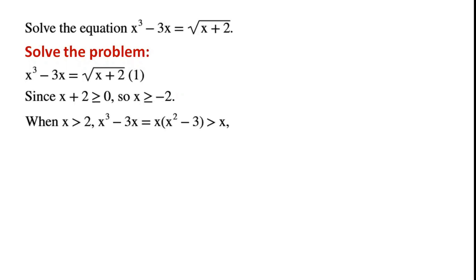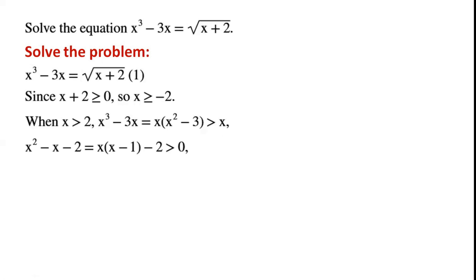How about when x is greater than 2? The left hand side of the equation can be factorized, so we can write x cubed minus 3x equals x times (x squared minus 3). When x is greater than 2, x squared minus 3 is greater than 1, so x times something greater than 1 must be greater than x. We also know that x squared minus x minus 2 can be written as x times (x minus 1) minus 2.